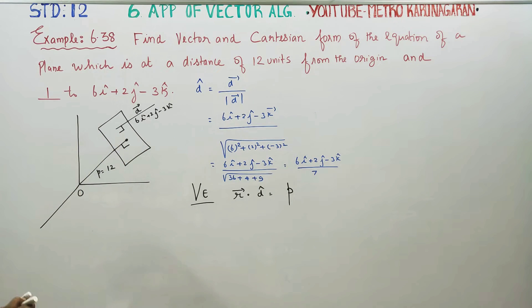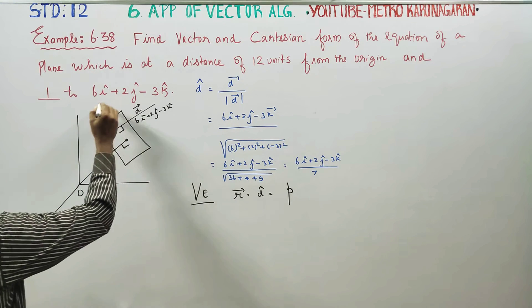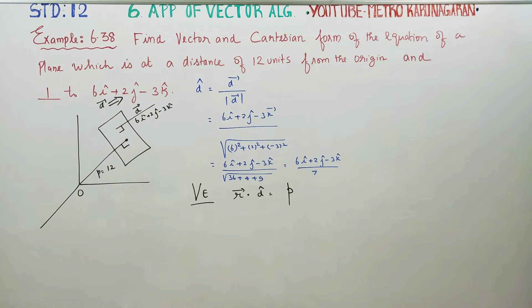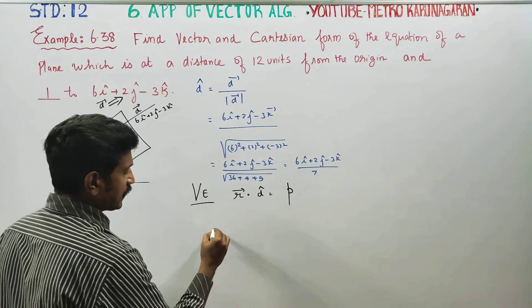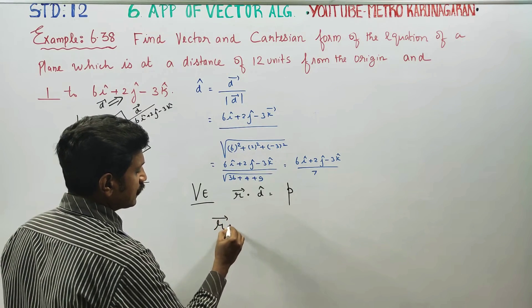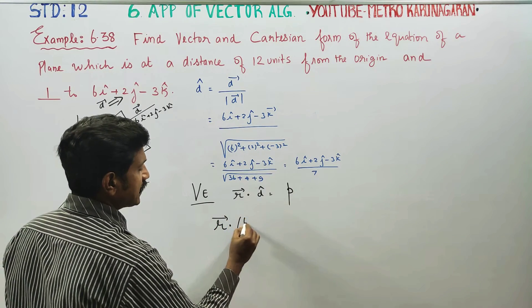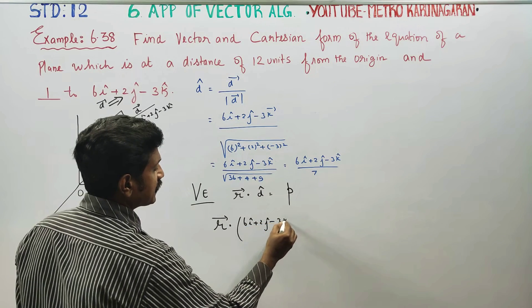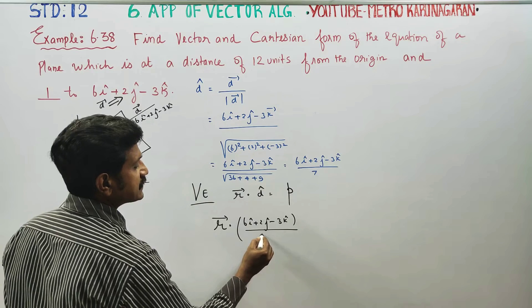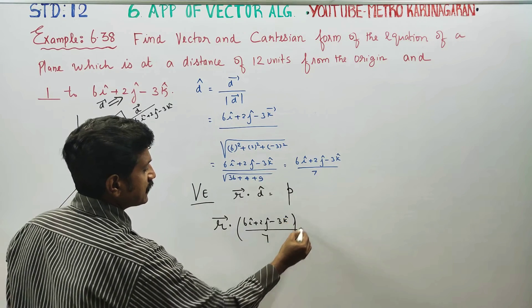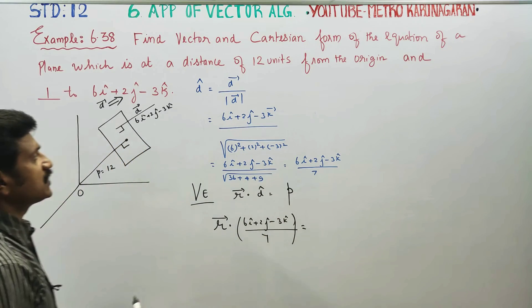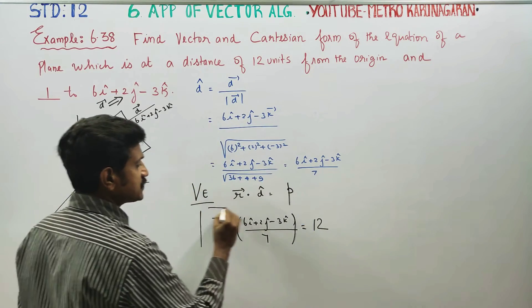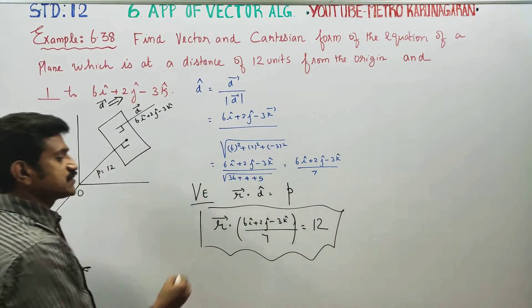That is the unit vector of d. The final vector equation answer is: r-vector dot (6i + 2j - 3k) / 7 = p. The perpendicular distance p is 12. So the vector equation is complete.